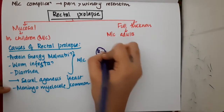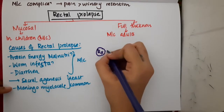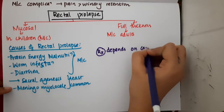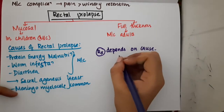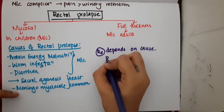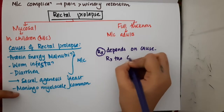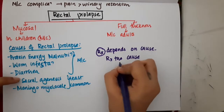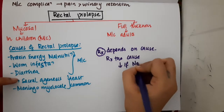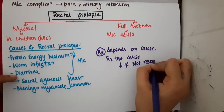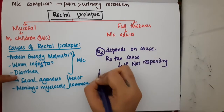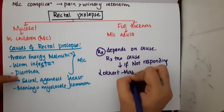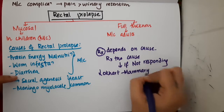How are you going to treat rectal prolapse? Rectal prolapse treatment mainly depends on the cause, so you will have to treat the cause first. If the patient is not responding after treating the cause, then you can do surgery — rectopexy can be done.